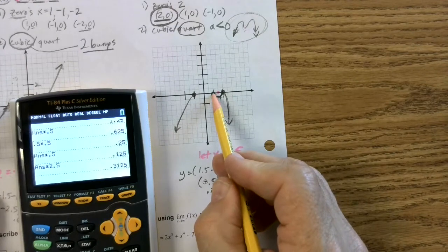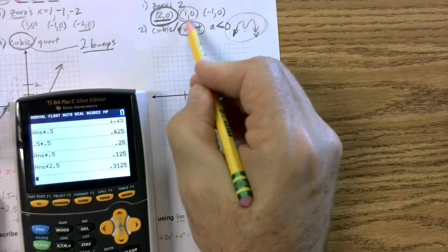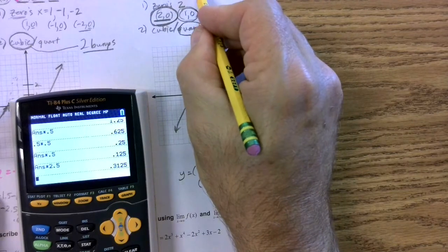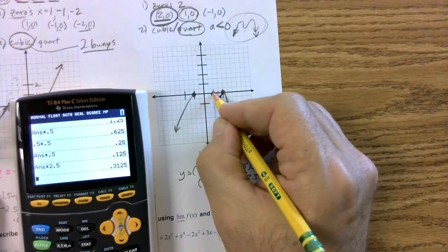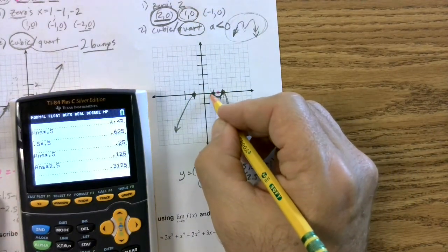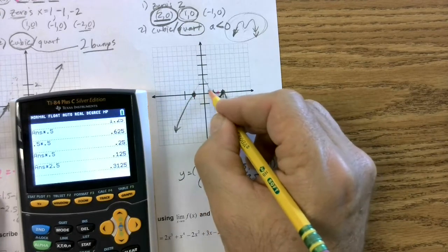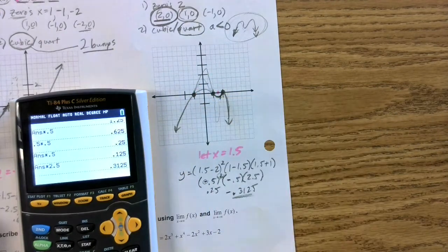Now wait, see that zero right there is 1. This 1 comes from here, which is odd multiplicity, which means it's going to go through here. So it's going to go up and down, but it might be flatter. It might be way higher. I don't know.